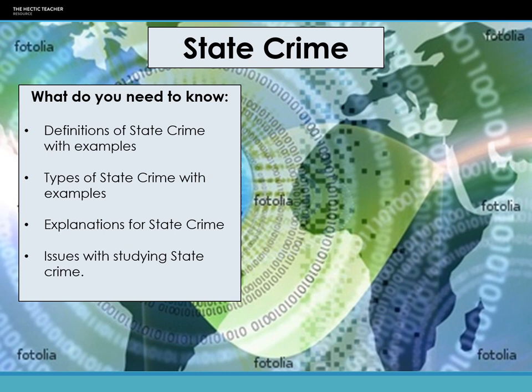In this lecture, I'm going to be looking at state crime. This is another area that is quite small. The likelihood of it coming up as a 30-marker — maybe, maybe not — is probably more likely within globalization and crime. Within this lecture, we're going to look at different definitions of state crime, types of state crime, explanations of why state crime occurs, and the issues with studying state crime.